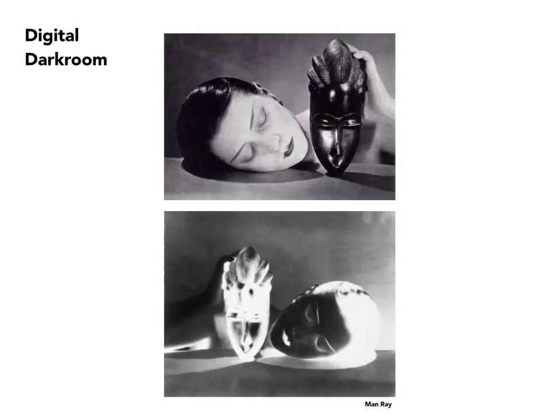Man Ray again — as I mentioned before, he manipulated a lot of his images. In this case there's actually not a lot of manipulation. What he has done is make a positive and a negative print from the same image, flipped the negative to place the mask on opposite sides, and then mounted these two together.